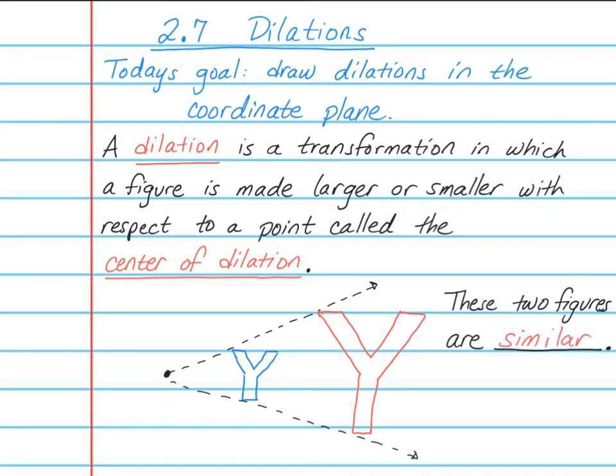And if you remember what that means, it means that the corresponding angles are equal and the corresponding sides are proportional. One more thing, this point here is called the center of dilation, which is what we went over when we did our vocabulary word.